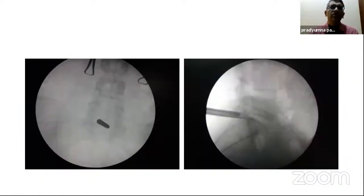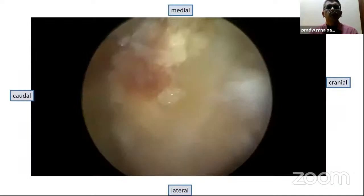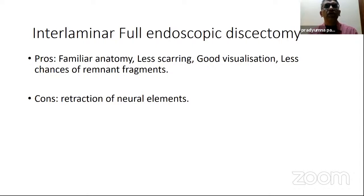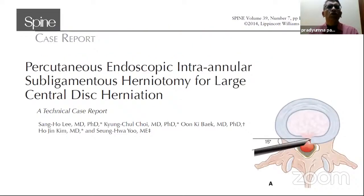Interlaminar endoscopic discectomy advantages: it uses familiar anatomy for all surgeons, there is less scarring compared to microdiscectomy, good visualization, and less chances of remnant fragment compared to the transforaminal axis. The con is retraction of neural elements. There are papers talking about endoscopic discectomy in large disc herniations — recurrence rate in all these studies, though small series of maybe 40-odd patients, is less than 10% on treating with endoscopic discectomy, and recurrences were also treated with endoscopic discectomy later on.